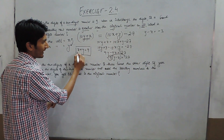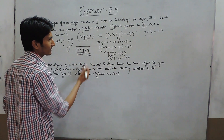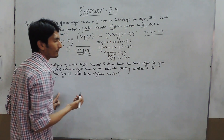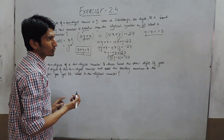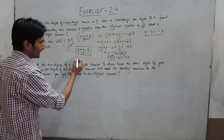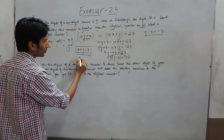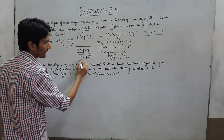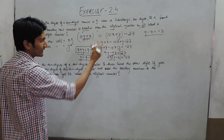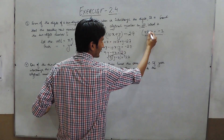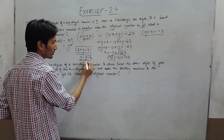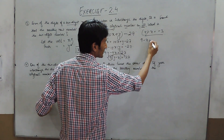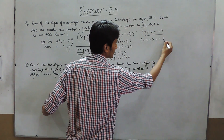In the first equation we have x plus y equals 9, and in the second equation we have x minus y equals minus 3. From the first equation, y equals 9 minus x. Substituting this into the second equation, in place of y we write 9 minus x. So we get: 9 minus x minus x equals minus 3.